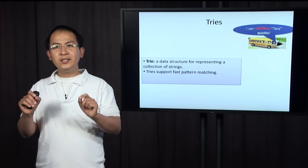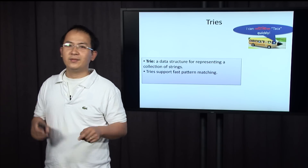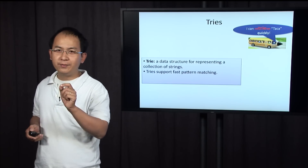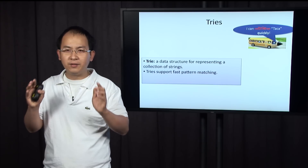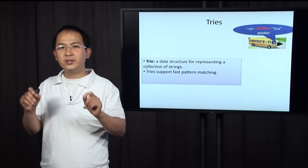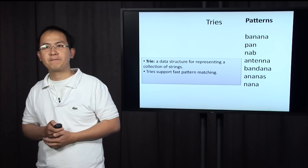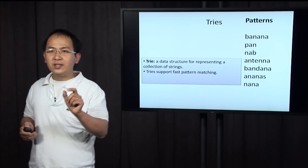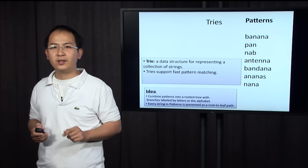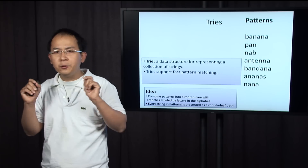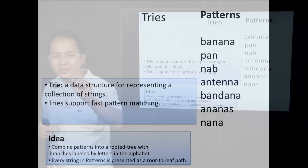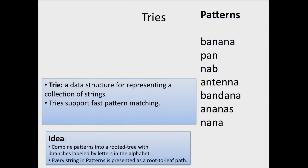This data structure is called a trie, coming from the word retrieval. A trie is a data structure for representing a collection of patterns, and the trie supports fast pattern matching. Given a set of patterns, the idea is to combine all these patterns into a rooted tree, with branches labeled by letters in the alphabet.